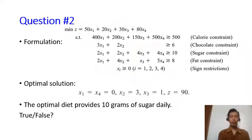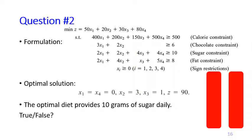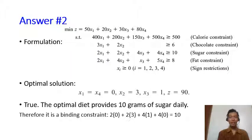The second question: given the formulation and optimal solution, there is a statement saying the optimal diet provides 10 grams of sugar daily — is it true or false? The answer is true. The optimal diet does provide 10 grams of sugar daily, which also means the sugar constraint is a binding constraint. That's the end of this section — see you in the next one. Thank you.